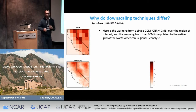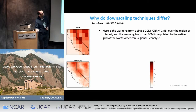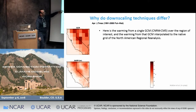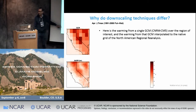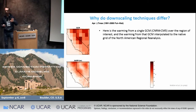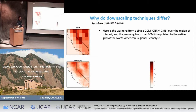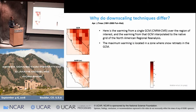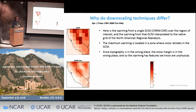We've been trying to figure out why these downscaling methods differ. Here is the warming from a single GCM — the CNRM-CM5 — over this region, and here's the same warming interpolated to the native grid of the North American Regional Reanalysis. The enhanced warming in the global model corresponds to where the global model places the snow margin. When NARR interpolates that, it creates warming in a region where we actually don't have a snow margin in reality. This means the warming has features that are quite unphysical in the global model — a phenomenon that's been written about quite a bit by many other people.